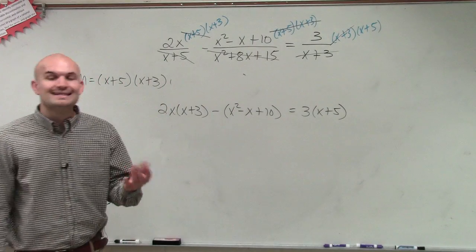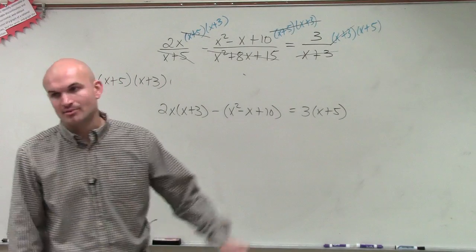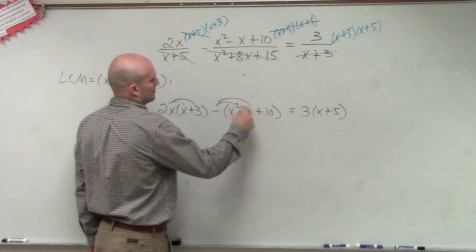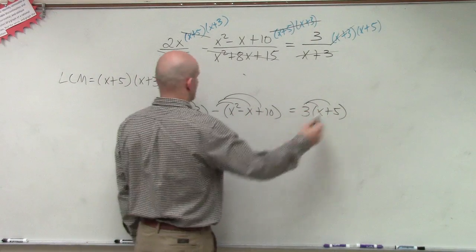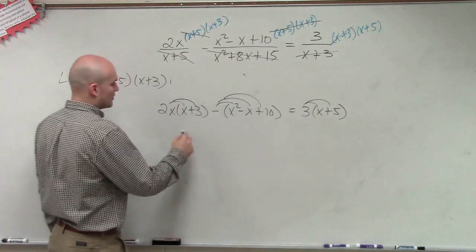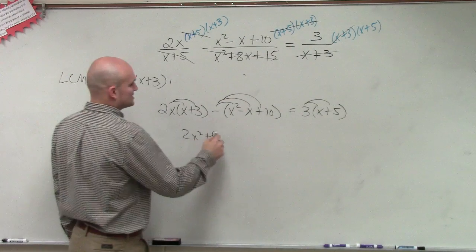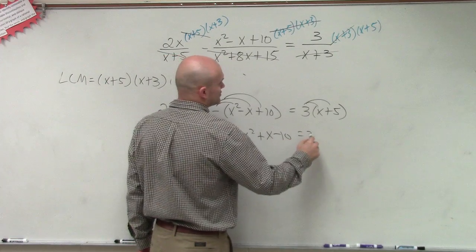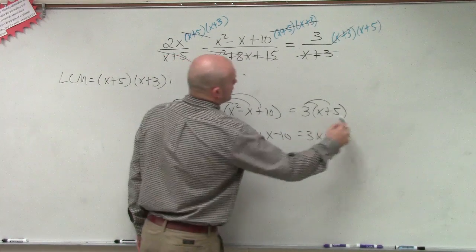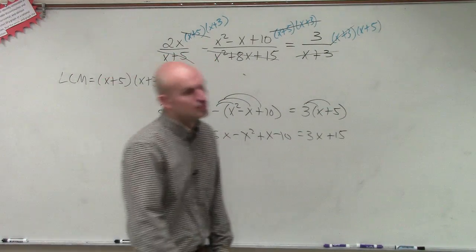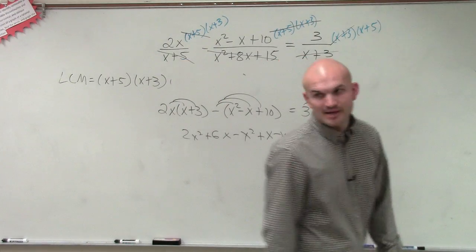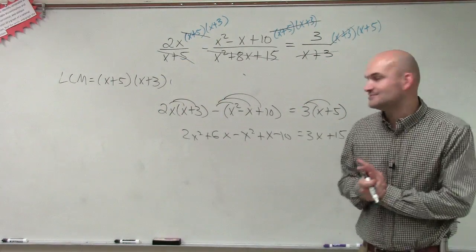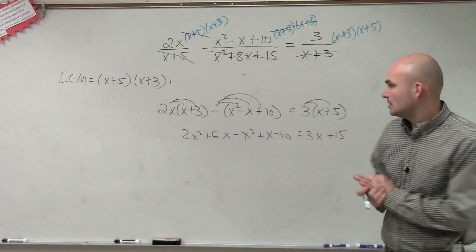Now, ladies and gentlemen, we can apply the distributive property. So we get: 2x² + 6x − (x² − x + 10) = 3x + 15. It's a big multi-step equation — taking it back to Algebra 1.